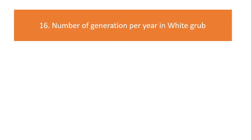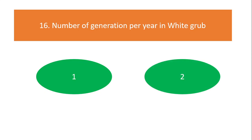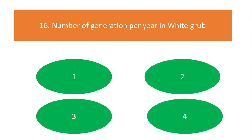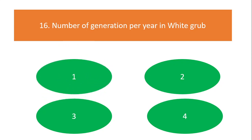Number of generations per year in white grub: one, two, three, or four generations? The answer is only one generation.